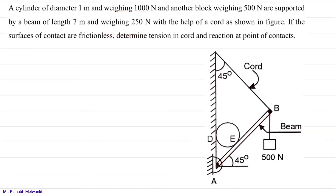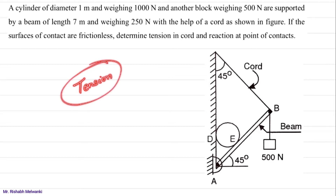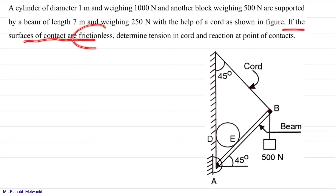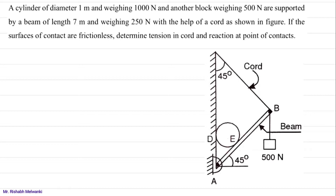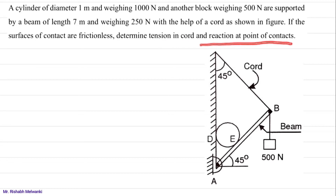The weight of this beam is also given. With the help of a chord, as shown in the figure, the force developed inside the chord is called tension. We have to find the tension in the chord. If the surfaces of contact are frictionless — this is very important — so here we do not have friction at any contact point. We have to determine the tension in the chord and the reaction at contact points.